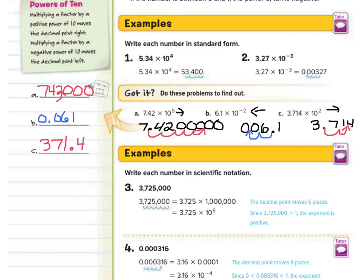A common misconception with scientific notation is looking at the exponent 5 and automatically assuming there will be 5 zeros in the answer — that's simply not the case. As we saw, 742,000 only had 3 zeros. When showing your work, if you write 5 zeros as you move your decimal point 5 spots to the right, you'll have more than enough zeros — but don't expect them all to remain in the final answer.